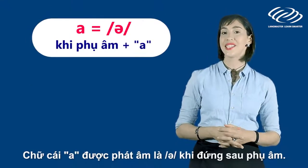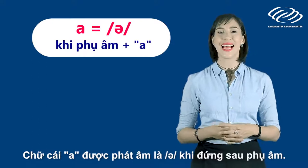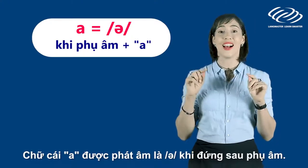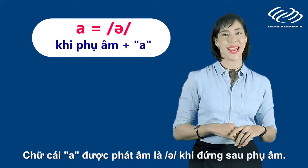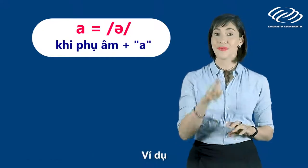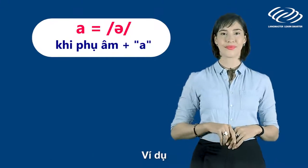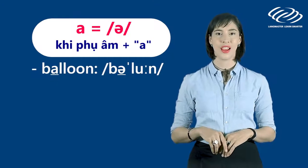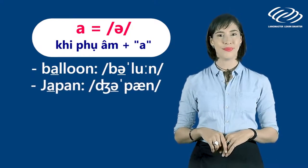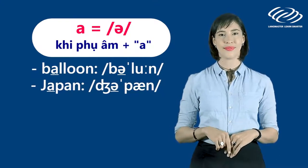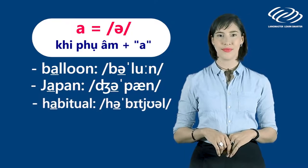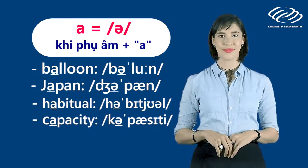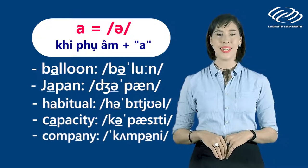The letter A is pronounced as 'uh' when it comes after a consonant in some cases. For example: balloon, Japan, habitual, capacity, company.